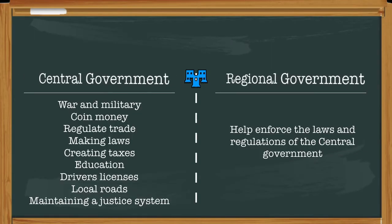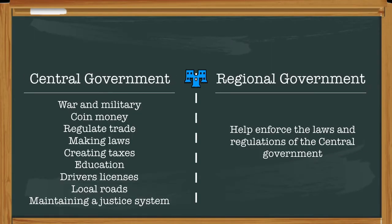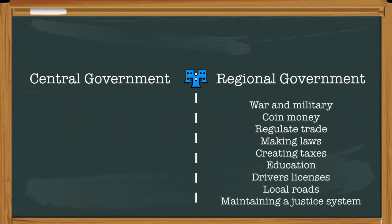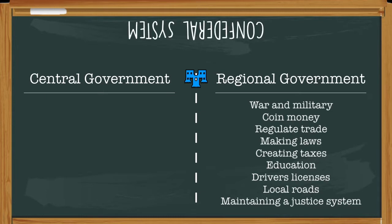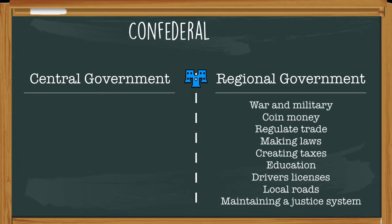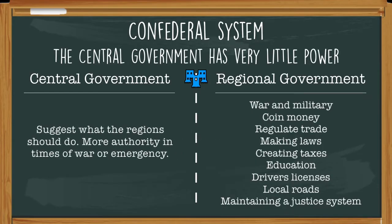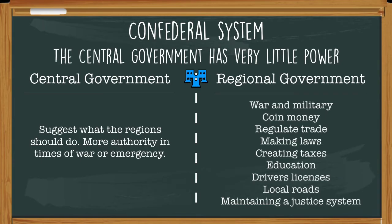But take that system and flip it upside down on its head, and you're going to see a system of government where all of the smaller regional governments have all of the powers. This crazy system is known as the confederal system. And you probably guessed — the central government has very little power. They can suggest what the regions or states should do, but the regional governments really don't have to listen to the central government.